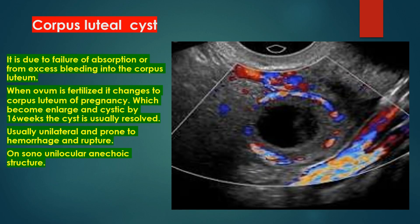Corpus luteal cysts. These are due to failure of absorption or from excess bleeding into the corpus luteum. When the ovum is fertilized, it changes to the corpus luteum of pregnancy, which becomes large and cystic. By 16 weeks the cyst is usually dissolved. These are usually unilateral, prone to hemorrhage and rupture, and appear as a unilocular anechoic structure.